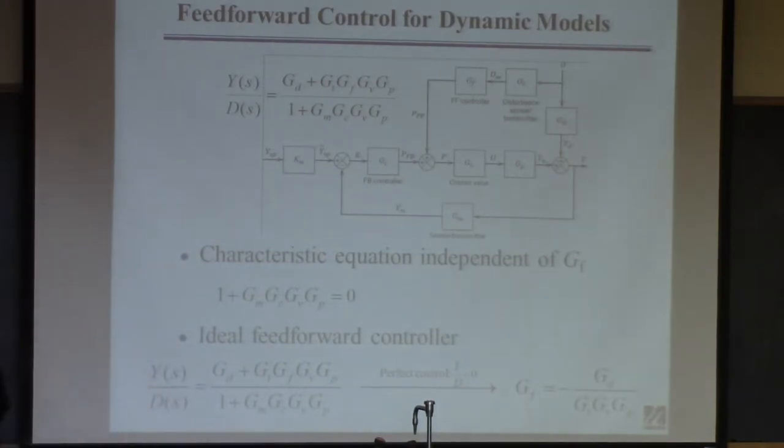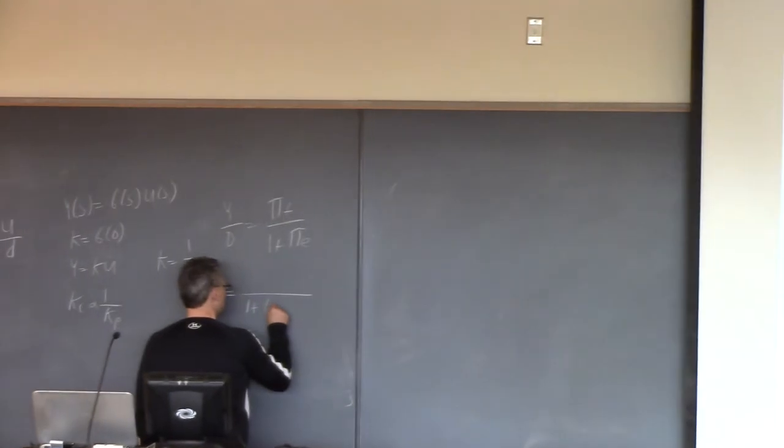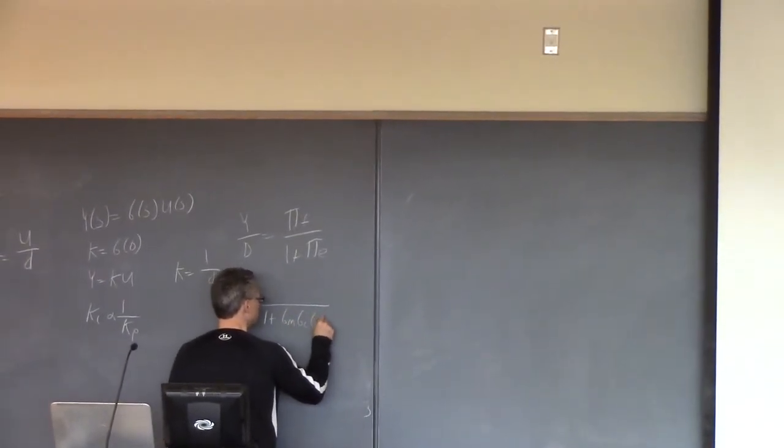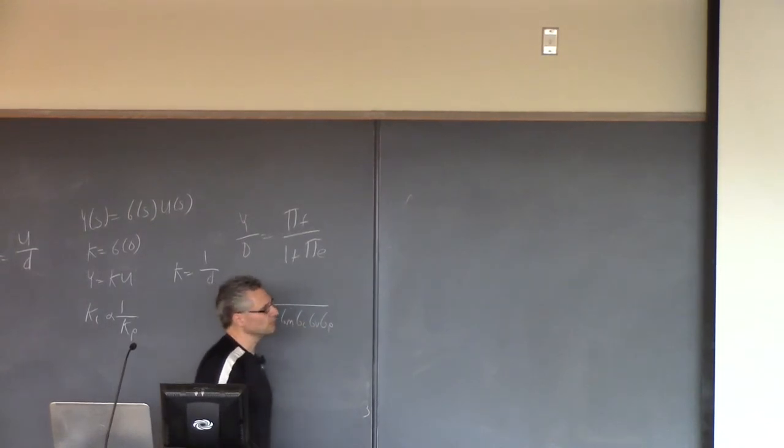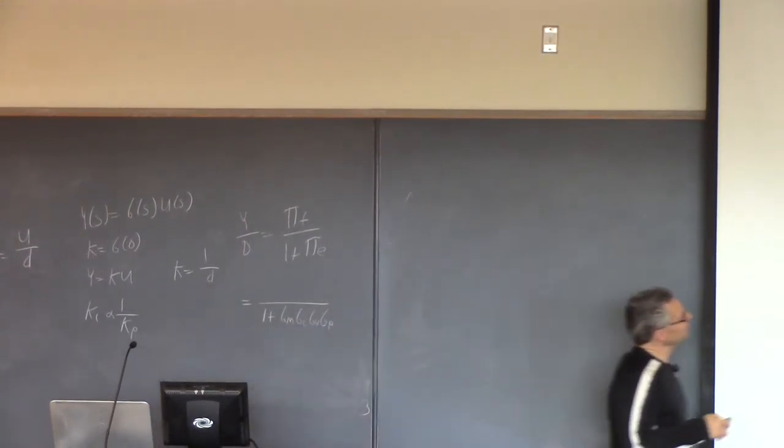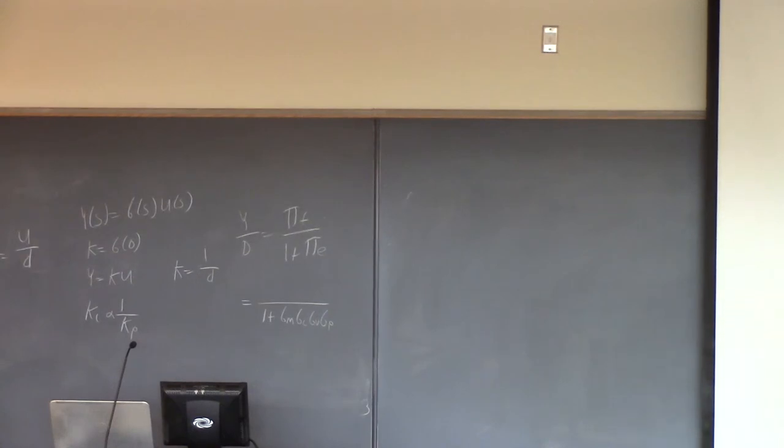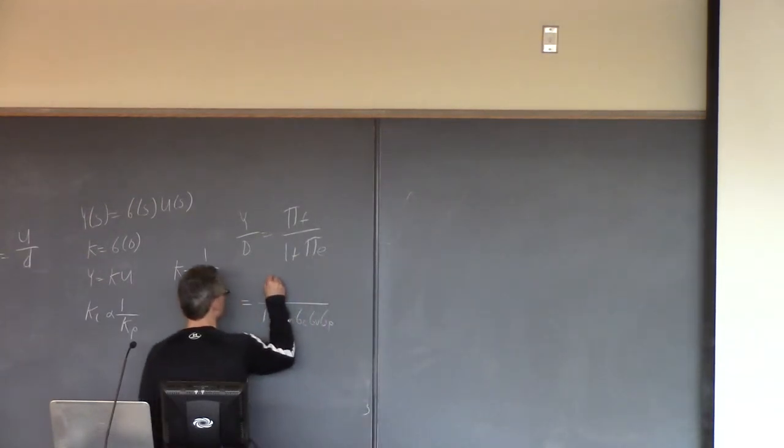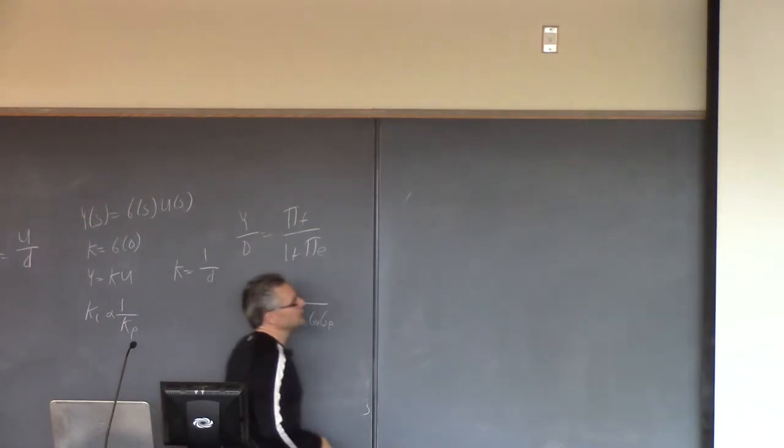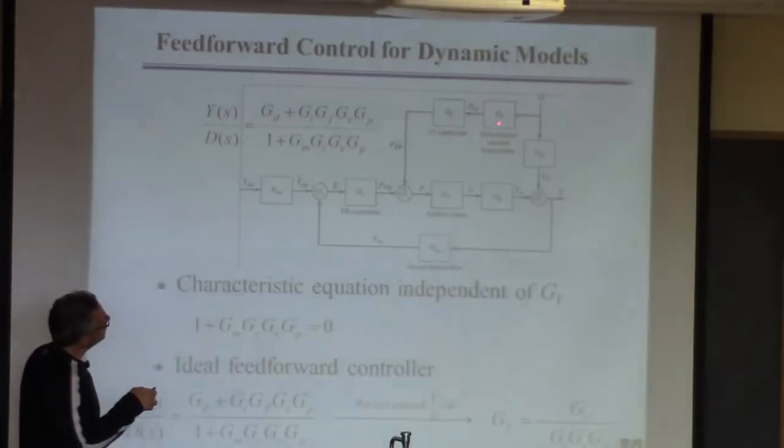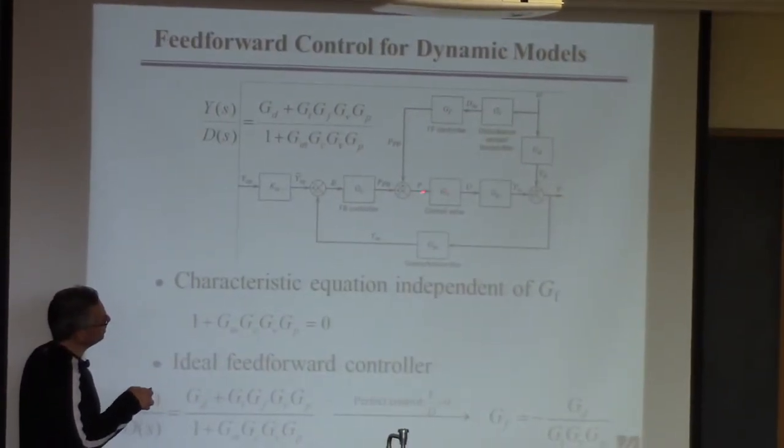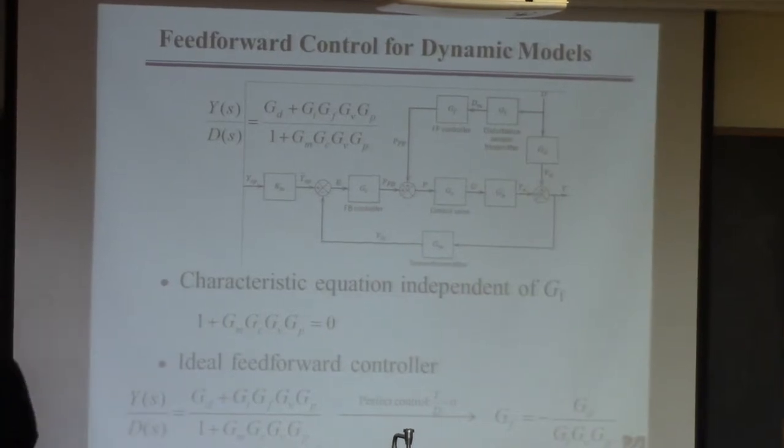That's that up there. So order doesn't matter. I want gm, gc, gv, gp. Okay. All right. Now, what is the feedforward path between d and y? Well, the idea here is there's two paths. The path that normally exists goes just through gd, plus another path that you've created. So I'm going to add these two paths together. So d can go through this first one, which is just gd.